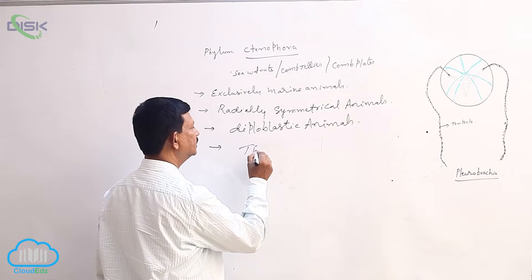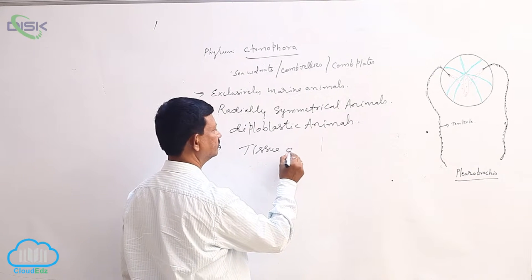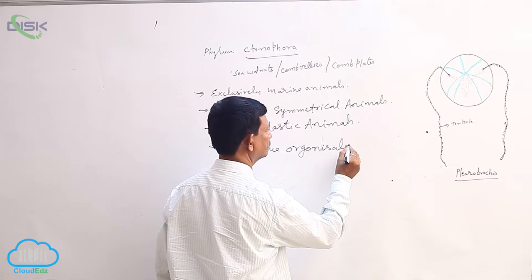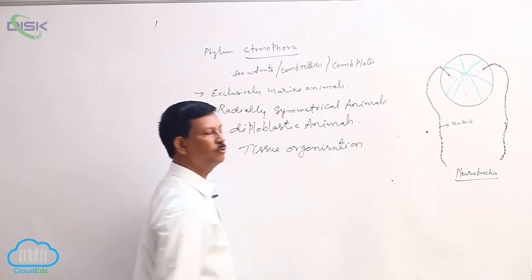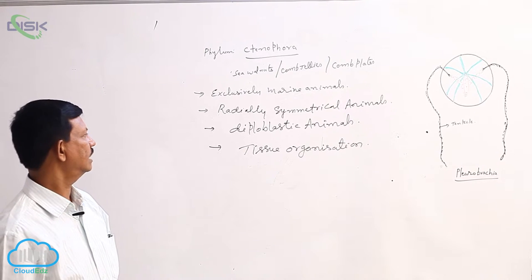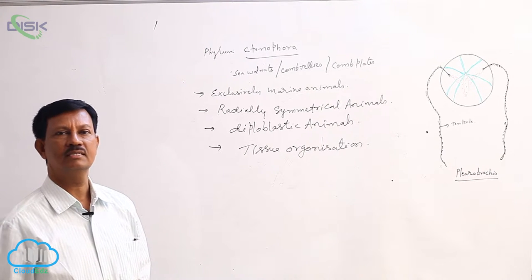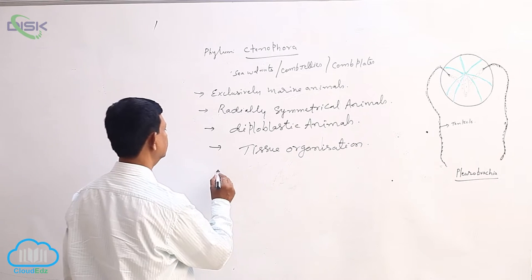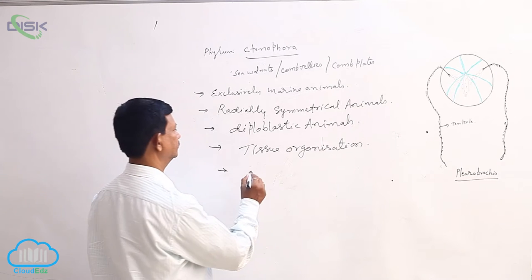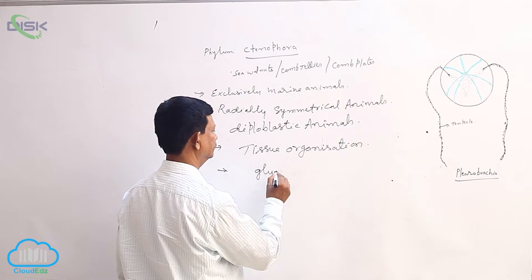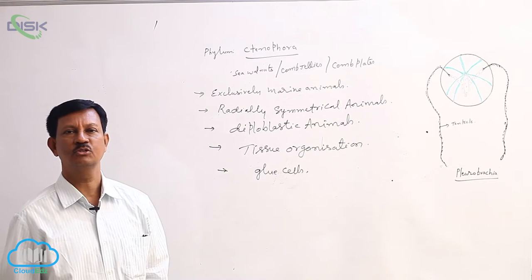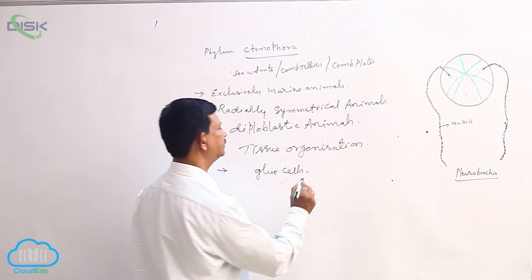The presence of tissue grade of organization — a group of cells are accumulated and form tissues — is present in these animals, but they lack an organ system. Special cells known as glue cells, or lasso cells, are present, which help in food capture.